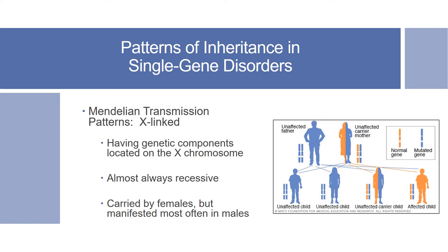X-linked transmission patterns are carried by females but most often found in males, and they almost always follow a recessive pattern. A carrier mother will have a 25% chance of having an unaffected son, a 25% chance of having an affected son, a 25% chance of having an unaffected daughter, and a 25% chance of having an unaffected daughter who is also a carrier.